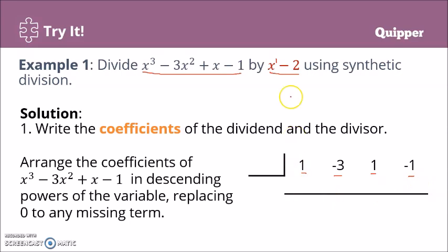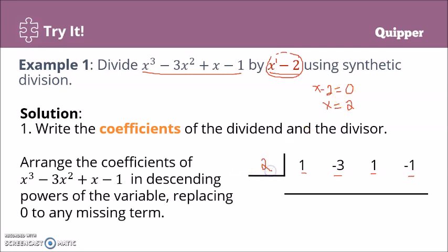Based on the divisor, we solve for the value of x. We have x minus 2 equals 0, so x equals 2. We write that number, 2, in the designated spot. The first step is to bring down the leading coefficient, which is 1. Note that this first position is always left blank.